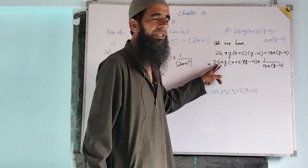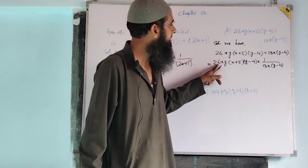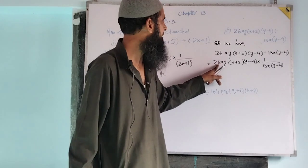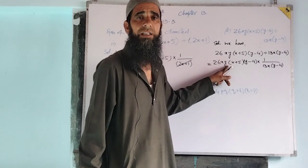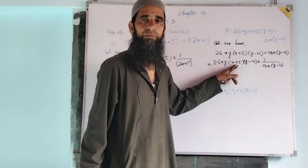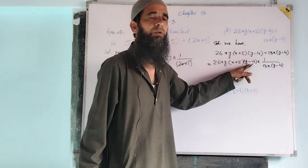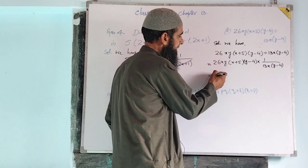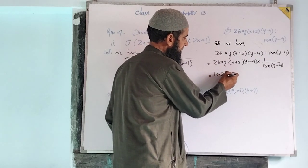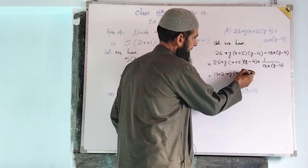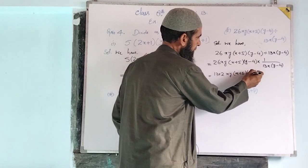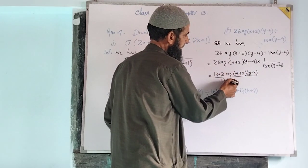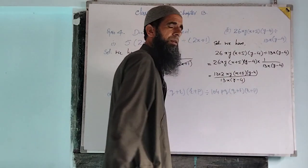Now in the numerator we have 26, which is simply 2 into 13. Then x into y, and (x+y) as the 4th factor, and (y-4) as the 5th factor. We write this as: 26 can be written as 13 into 2, times x into y into (x+y) into (y-4), divided by 13 times x times (y-4).